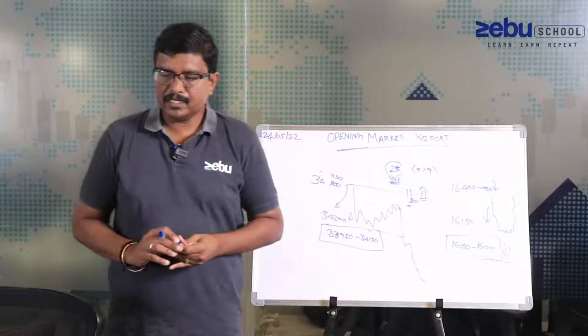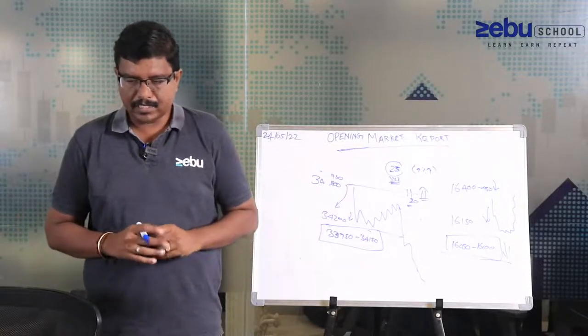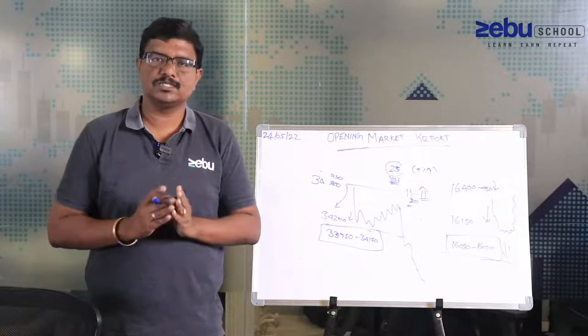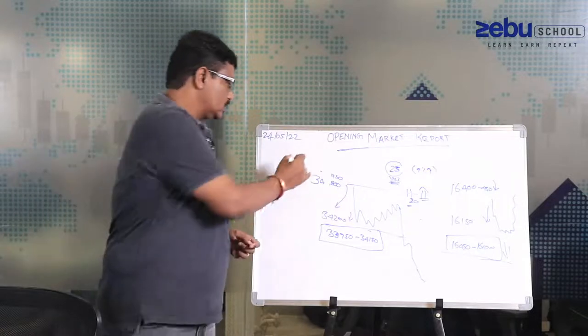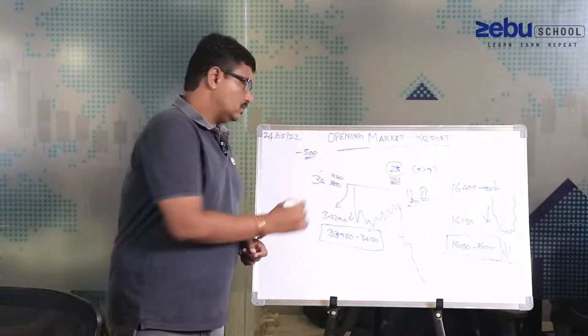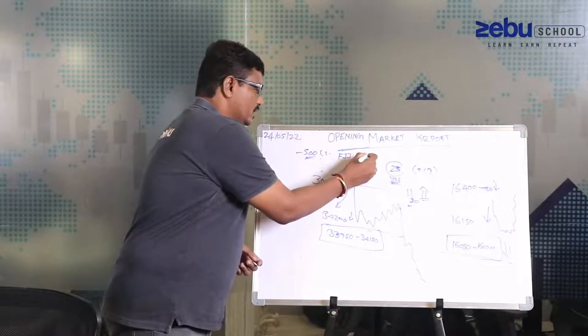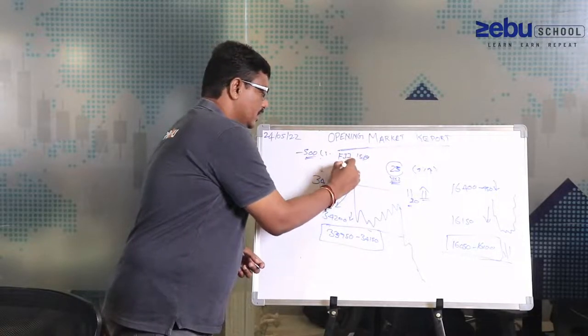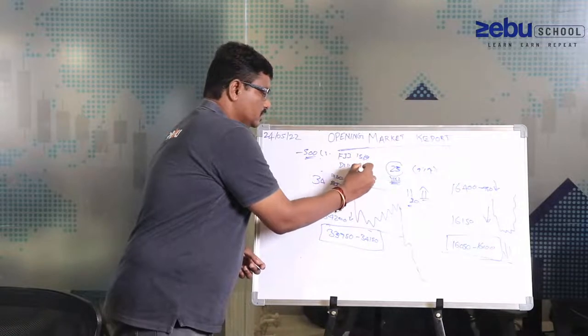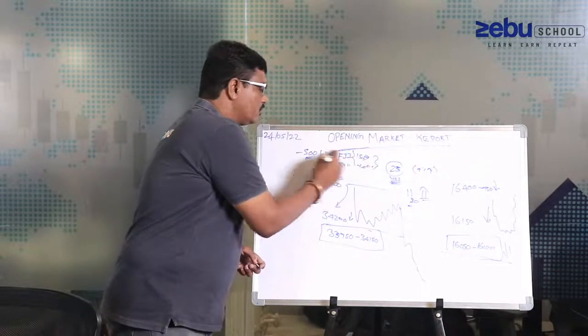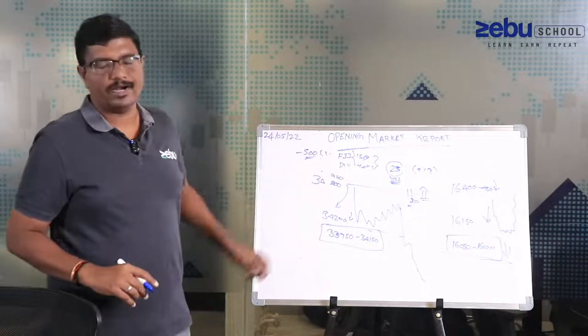That is the main important thing you need to take care. Moreover, if you look at yesterday's institutional net outflow, net outflow seems to be minus 500 roughly. That means FII sold for 1,500 and DII bought for roughly approximately 1,000, so net outflow is 500 crores.